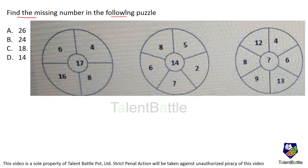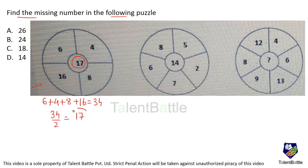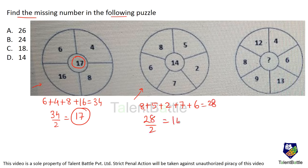Find the missing number in the following puzzle. Observe the first wheel: add all the outside numbers — 6 plus 4 is 10, plus 8 is 18, plus 16 is 34. The center number is 17, so 34 divided by 2 equals 17. Let's check the second wheel: 8 plus 5 plus 2 plus 7 plus 6 equals 28, and 28 divided by 2 equals 14, which matches the inner number.